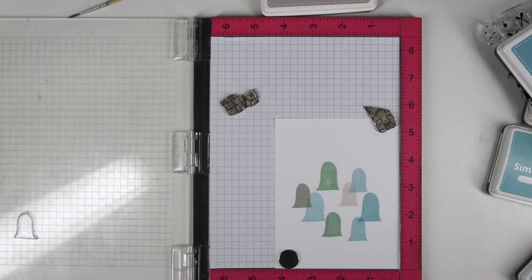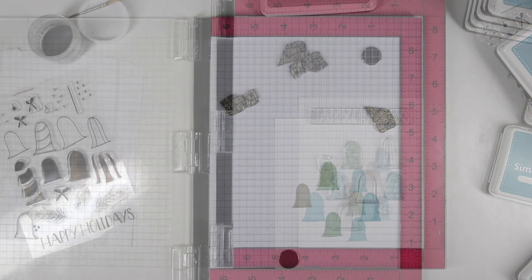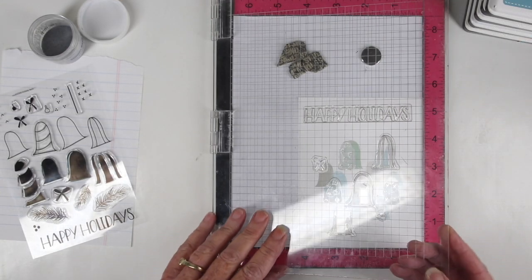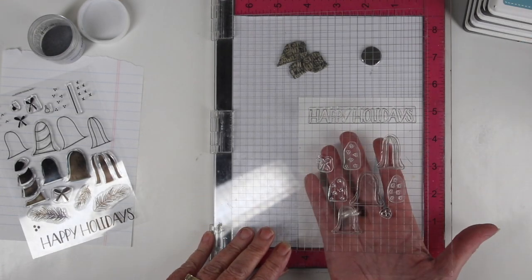Once I've completed stamping my solid pieces I am going to let this sit overnight so it can dry completely and then I can go back to it and start adding my silver embossing.